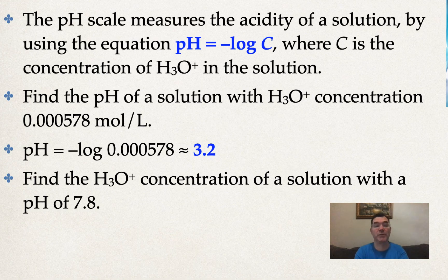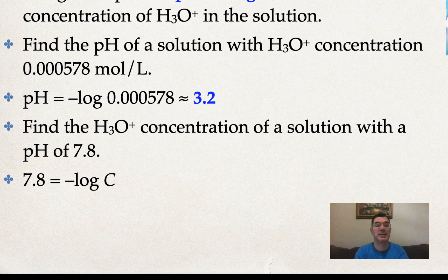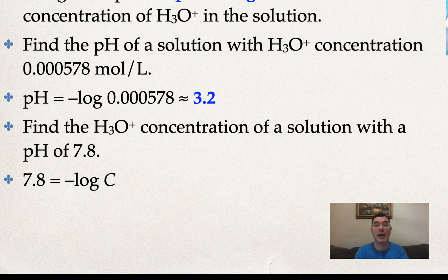I could also ask you for the H3O+ concentration of a solution that has a given pH like 7.8. So basically I'm setting it up the same, but now I'm replacing pH with the 7.8 because that's what I know. I don't know the concentration, so I'm replacing that with a constant C and I'm going to solve for that.